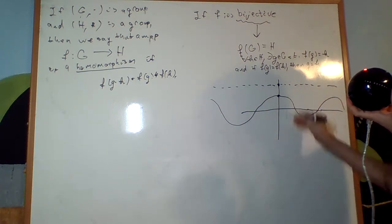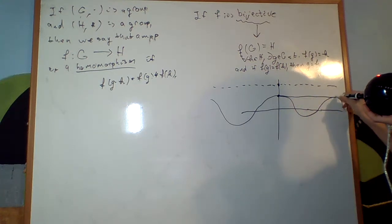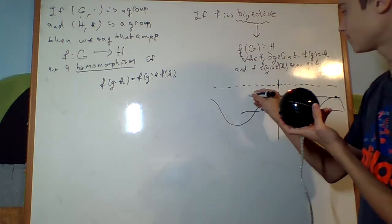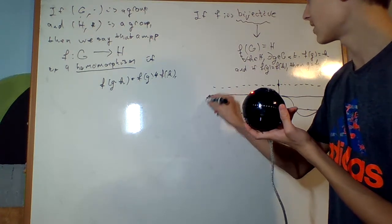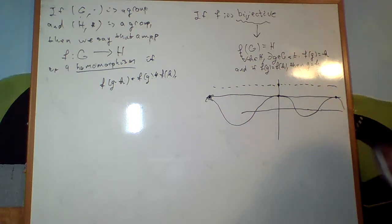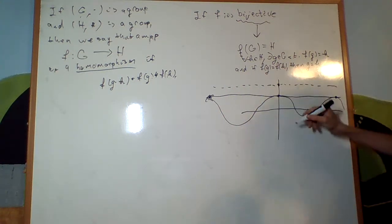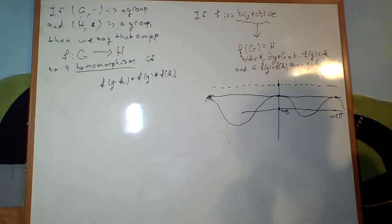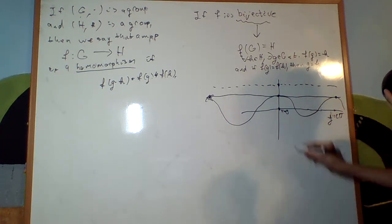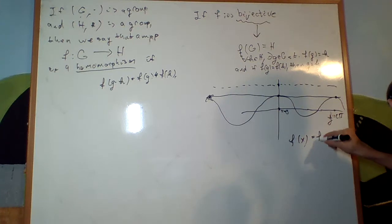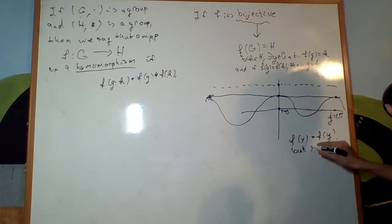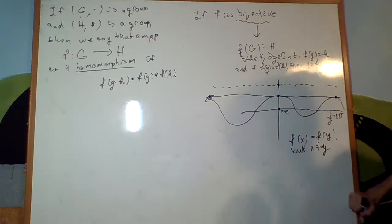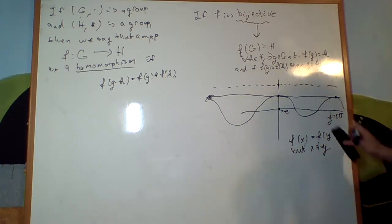And given this point, I can find infinitely many points that have that same value. That means that if I can find, right here, X equals 0, right here, X equals 2 pi. You know for a fact that F of X equals F of Y, but X is not equal to Y. So this is not bijective. You cannot use this as an example of a homomorphism. And it's not even close to a homomorphism, because it doesn't have this property.